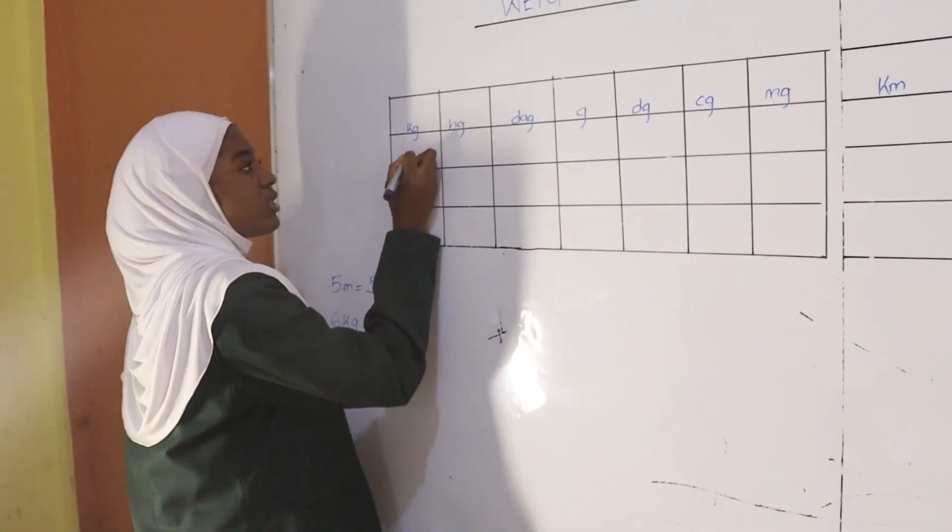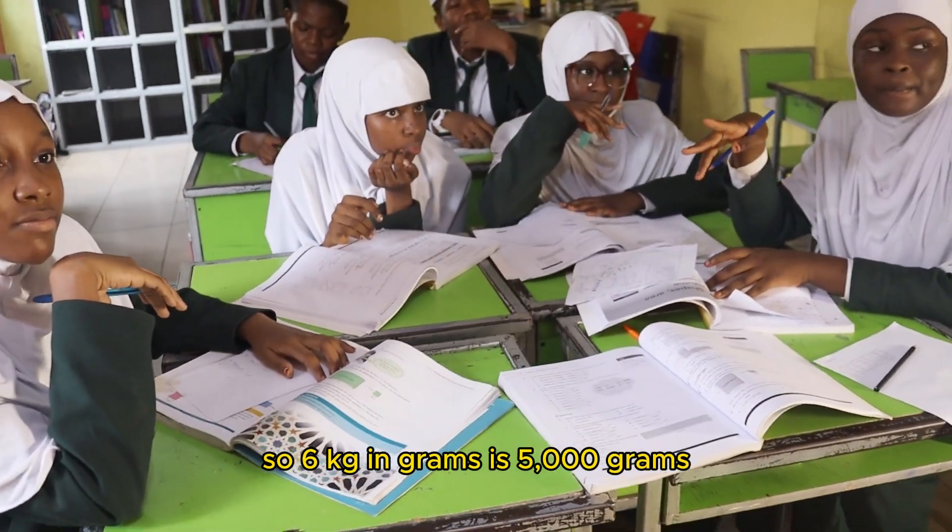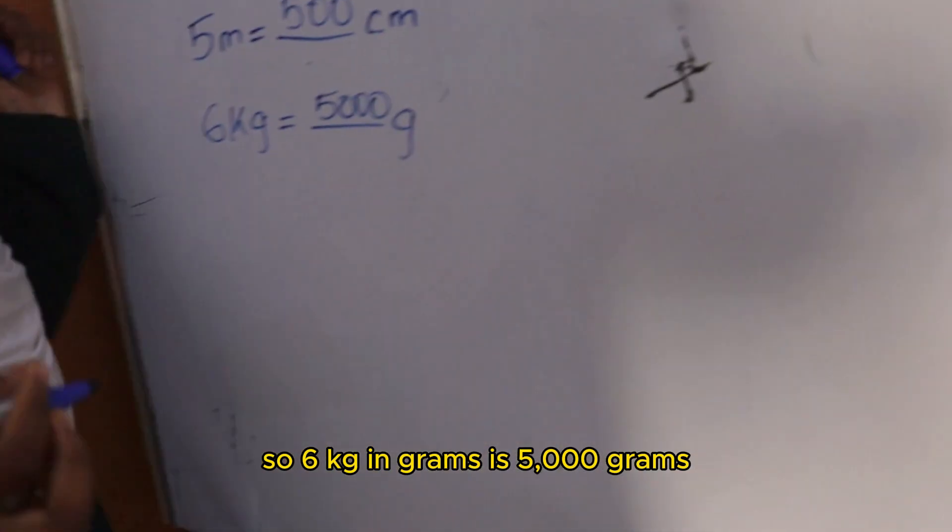We did - put 6 under kilograms and add zeros to reach the assigned unit. So 6 kilograms in grams is 5,000 grams.